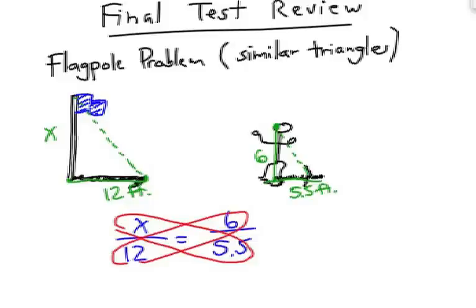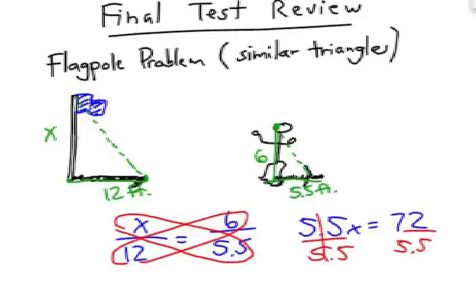If you think you can do it from here, hit pause and try it. When I work this out, I get 5.5x equals 72. I'm going to divide each side by 5.5, and that will give me my answer.